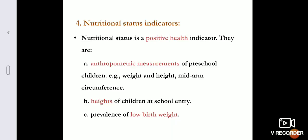Coming to nutritional status indicators, the positive indicators commonly used are anthropometric measurements — height and weight of the child — and low birth weight. These measurements are taken routinely, as when we take children to doctors they usually first measure the child to assess their nutritional status.